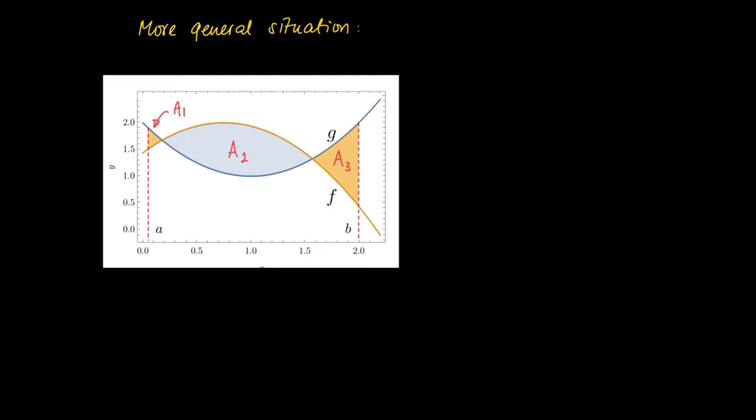If we want to calculate the surface area enclosed by the graphs g and f in between the lines x equals a and x equals b, we have to calculate the pieces A1, A2, and A3.